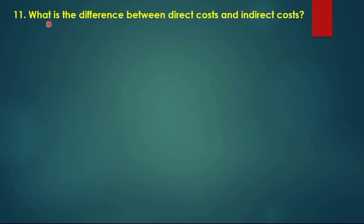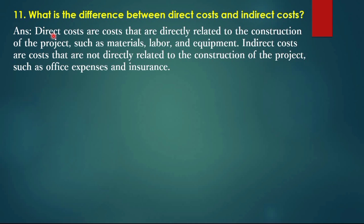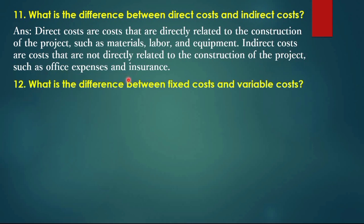Question 11: What is the difference between direct costs and indirect costs? Direct costs are costs directly related to the construction of the project, such as materials, labor, and equipment. Indirect costs are costs not directly related to the construction, such as office expenses and insurance. Question 12: What is the difference between fixed costs and variable costs?